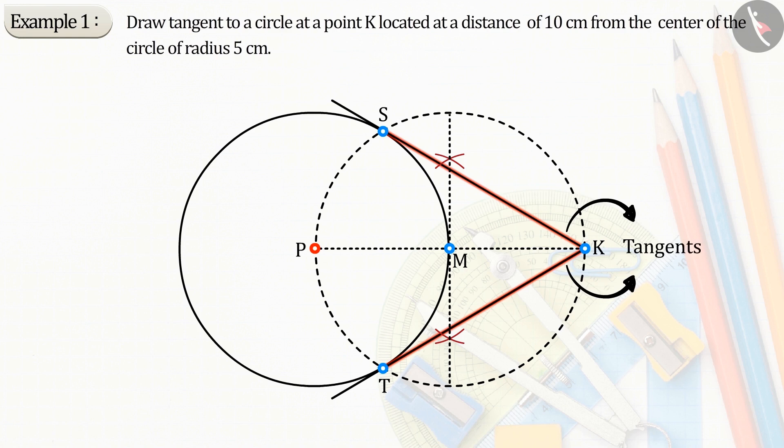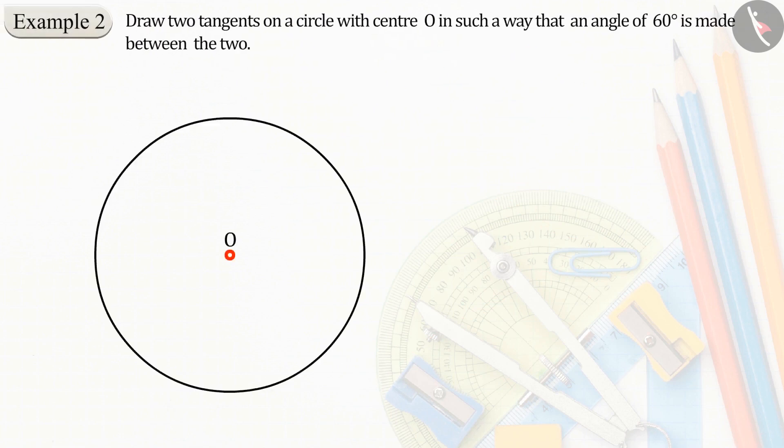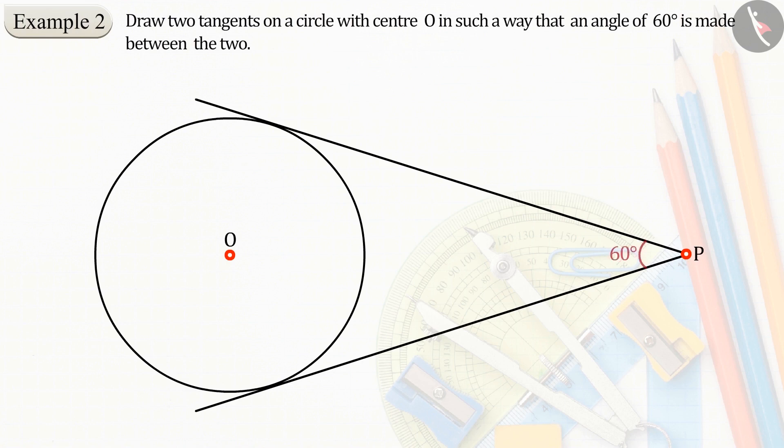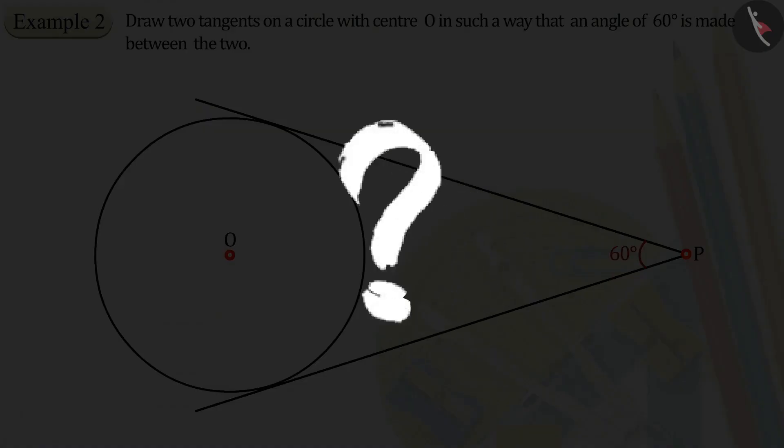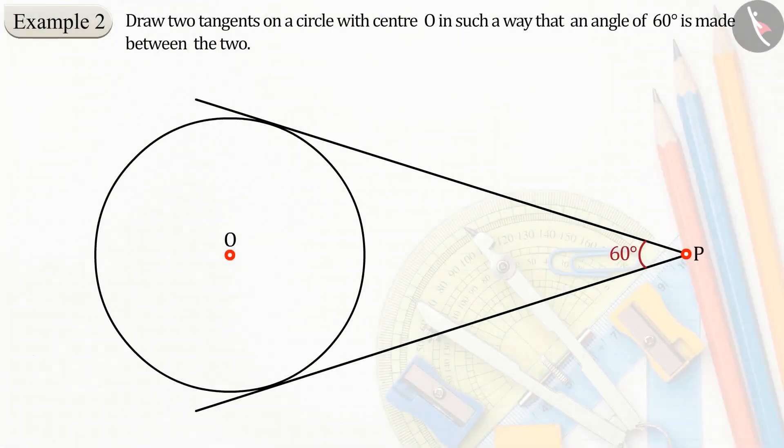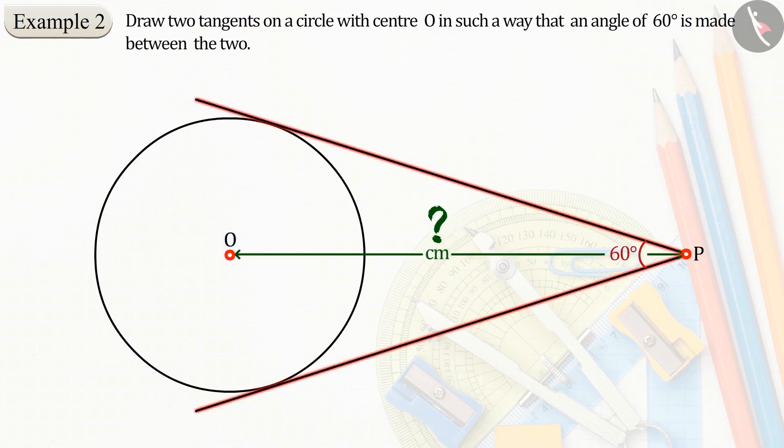Let us see another example based on the tangent lines of a circle. Draw two tangent lines on a circle with center O in such a way that an angle of 60 degrees is made between the two. Can you tell what is different in this question? Like every question, in this question also we have a circle and know about its center. But in this question, we have not been told the distance between the outer point and the center of the circle. But the angle formed between the tangent lines is described.